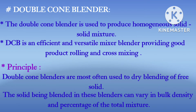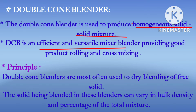The Double Cone Blender: this is one of the common process steps in which we can manufacture products for industries such as healthcare, food, chemical, and cosmetic detergents. This double cone blender is used to produce a homogeneous solid-solid mixture. It is an efficient and versatile blender which provides good product rolling across the mixture, and can perform uniform blending and de-agglomeration functions.